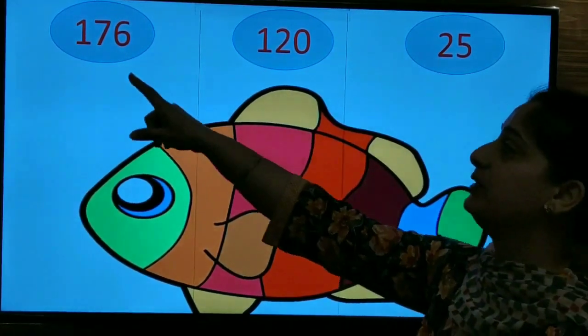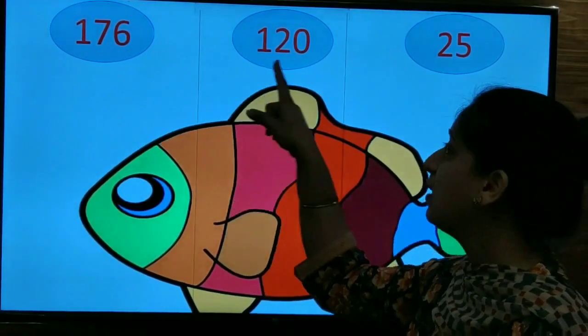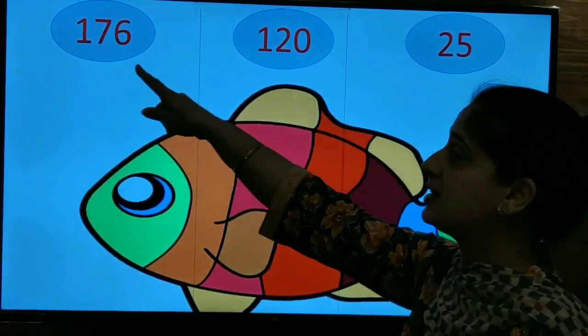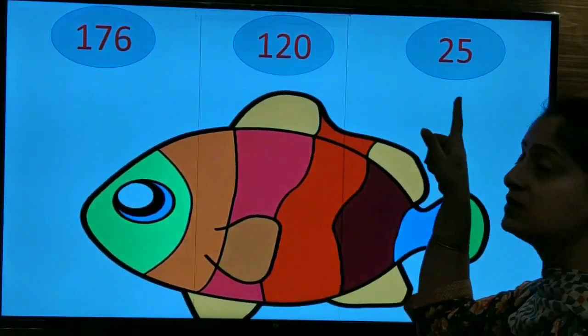So our descending order will be 176, 120 and 25. Biggest, smaller, smallest.